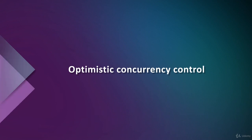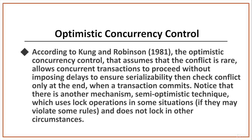There are two main kinds of concurrency control mechanisms: the pessimistic or conservative concurrency control, and the optimistic concurrency control. The pessimistic concurrency control delays transactions if they conflict with other transactions at some time in the future, by locking or a timestamping technique. The optimistic concurrency control assumes that conflict is rare, allows concurrent transactions to proceed without imposing delays to ensure serializability, then checks conflicts only at the end when a transaction commits.